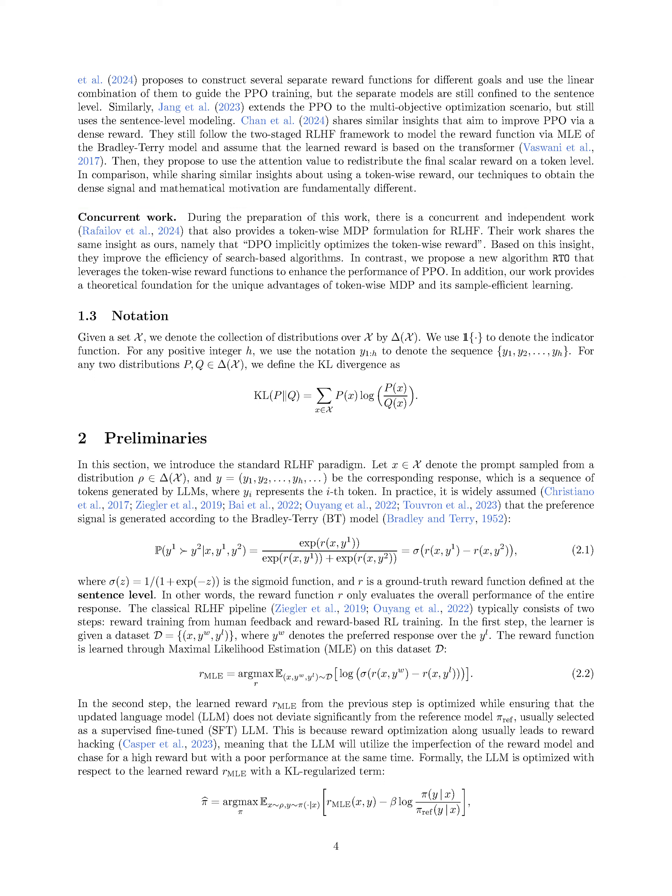In summary, we introduce the RLHF algorithm, which builds upon the classic RLHF framework and explores alternative approaches to PPO due to its resource-intensive nature. Researchers have proposed rejection sampling fine-tuning and direct preference learning approaches like DPO, aiming to enhance language model performance without solely relying on PPO. Our work focuses on improving PPO in the context of RLHF by leveraging token-wise reward functions, contrasting with other approaches that still operate at the sentence level.